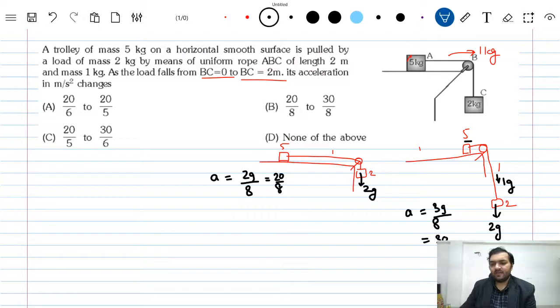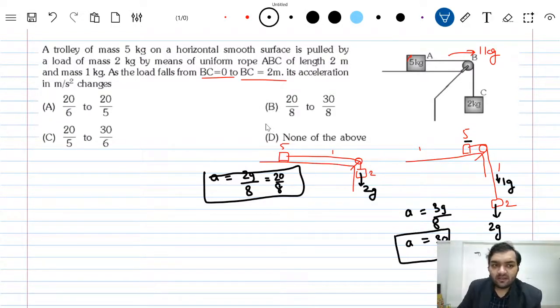This will be 30 by 8, so the acceleration will be 30 by 8 meters per second squared. So the acceleration changes from 20 by 8 to 30 by 8.